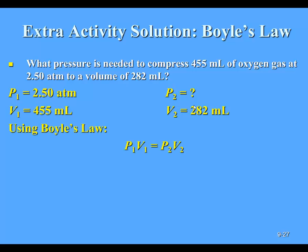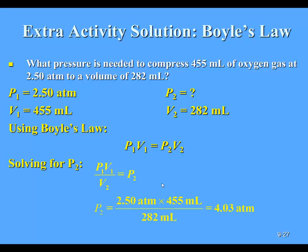The equation I'm using, keeping temperature and moles constant, is P1 times V1 equals P2 times V2. I want to solve for P2, so I divide both sides by V2. P2 equals P1 times V1 divided by V2. Plugging in our values: P2 equals 2.5 atm times 455 milliliters divided by 282 milliliters, giving a final pressure of 4.03 atm. So we'd have to increase pressure from 2.5 atm to 4.03 atm for the volume to decrease from 455 milliliters to 282 milliliters.